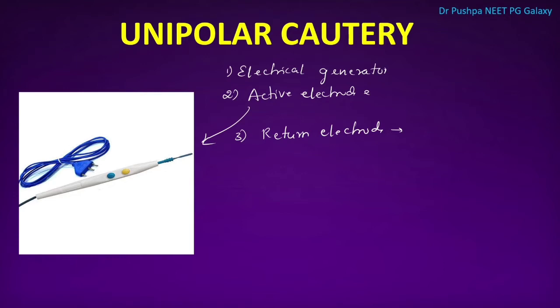In monopolar cautery, electric current passes through the active electrode, then through the patient's body, and exits from the return electrode — the cautery plate. The patient's body becomes part of the circuit. A continuous waveform gives cutting current to incise tissues, whereas an intermittent waveform gives coagulation current.